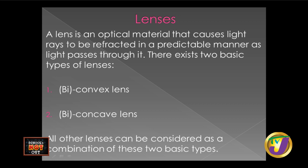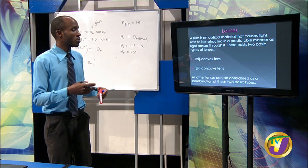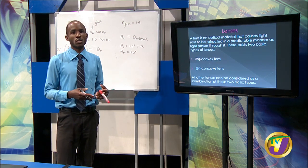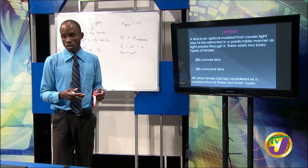Now let us look at lenses. A lens is an optical material that causes light rays to be refracted in a predictable manner as light passes through it. There exist two basic types of lenses: the biconvex lens and the biconcave lens. All other lenses can be considered a combination of these two basic types — there are cylindrical, convex, concave, and other kinds used for different applications. But essentially, lenses boil down to either being biconvex or biconcave in nature.